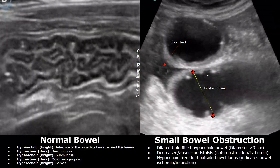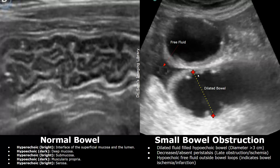This is another image showing normal bowel — you can see its various layers clearly. In the image on the right we have a dilated fluid-filled hypoechoic bowel in a case of small bowel obstruction. Peristalsis was absent in this case.